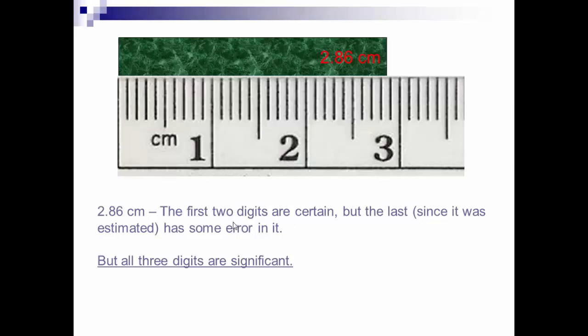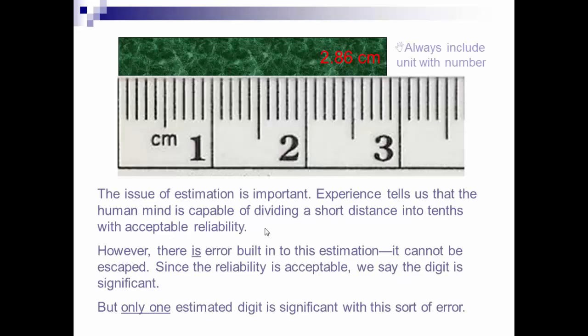Interestingly enough, what the human eye is very good at doing is dividing things into 10 equal parts. So if we look at this space between the 8 and the 9, and we mentally divide it into 10 equal parts, we can say that the edge of this is beyond the 5, probably not to the 7, and we can estimate it to be at the 6 tenths spot of the 10 that you marked. So this gives us a length of our piece of marble of 2.86 centimeters. The first two digits are certain. We know for sure that it's 2.8 because 2.8 is to this line, and we know for sure it's past that. The last one is estimated.